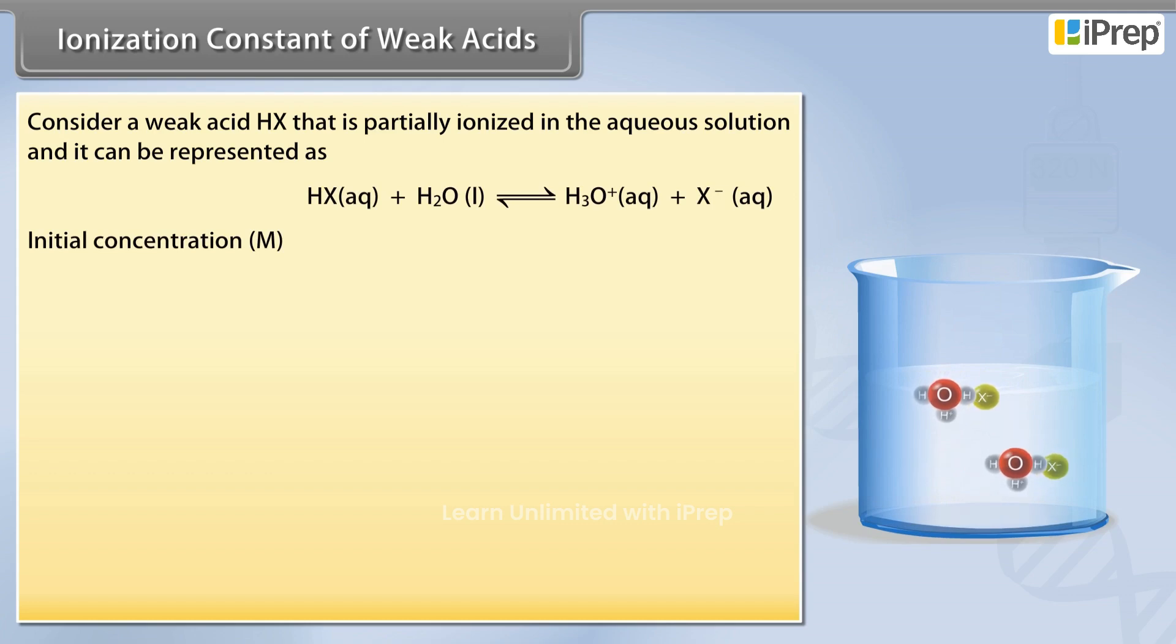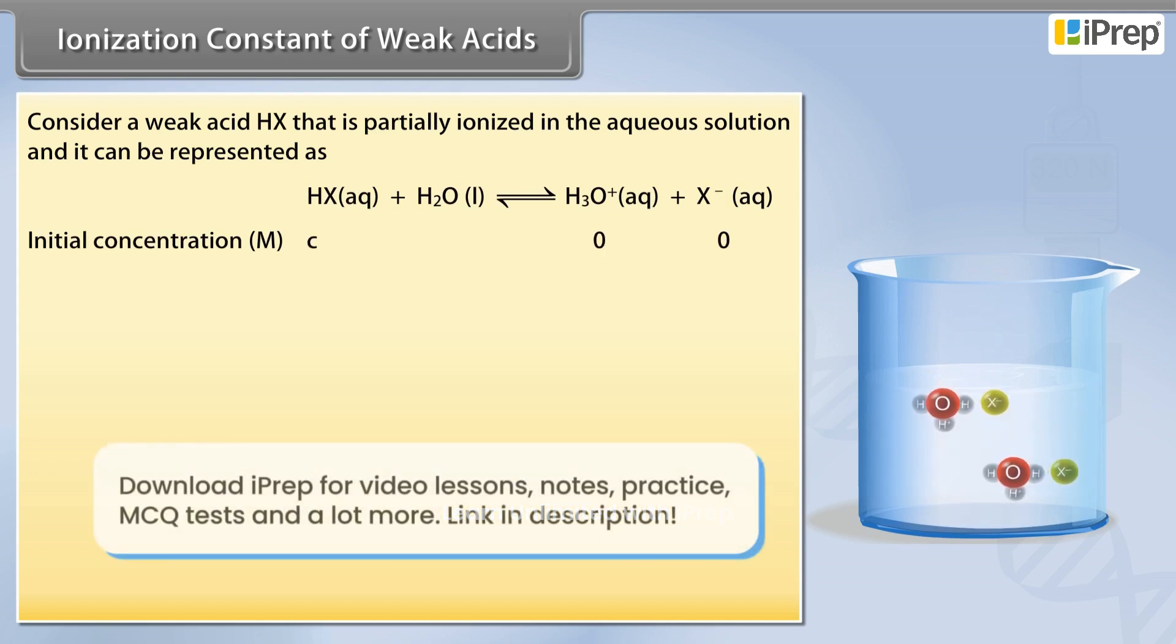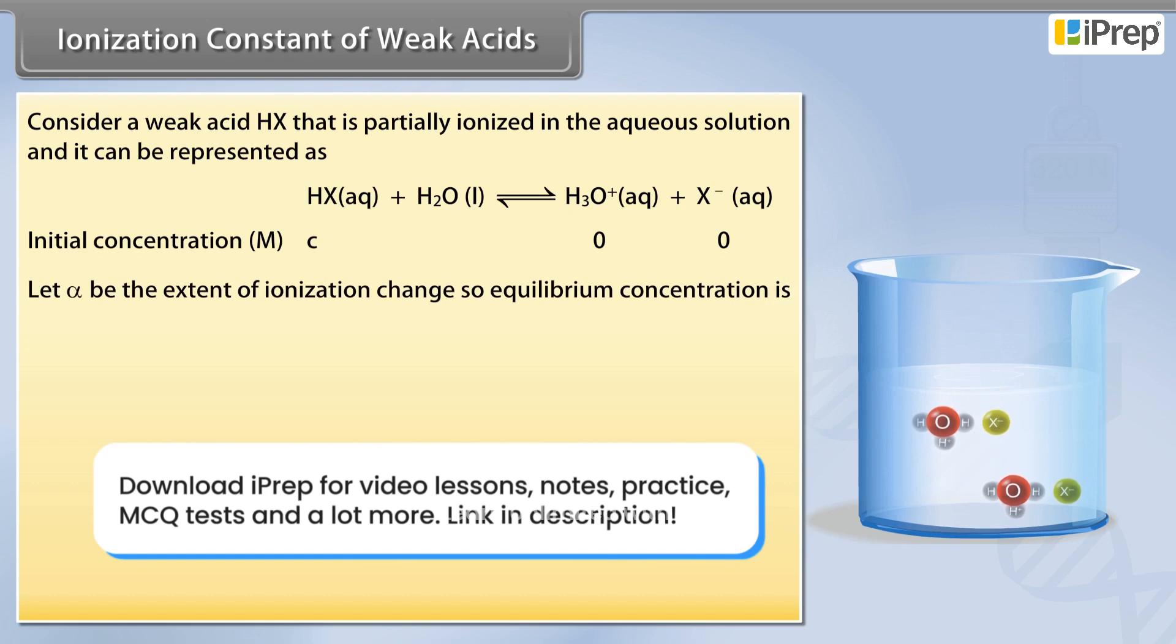Let initial concentration of HX be C. Let alpha be the extent of ionization change, so equilibrium concentration of HX is C minus C alpha.